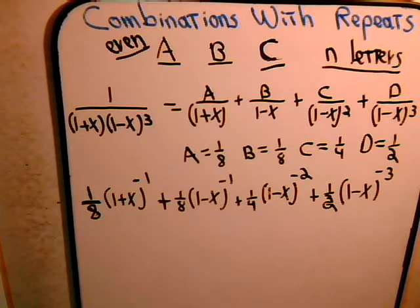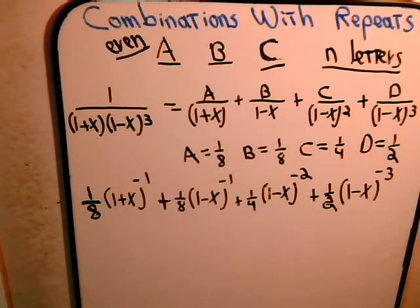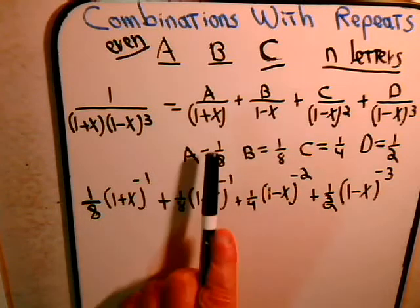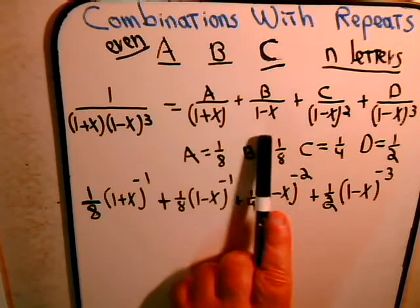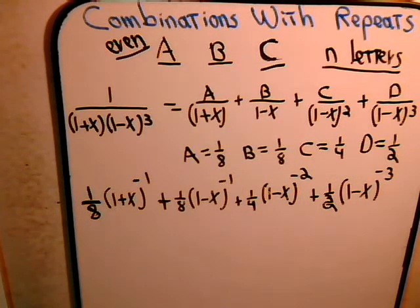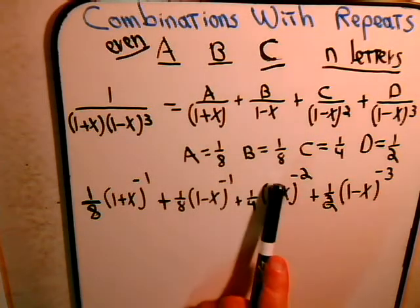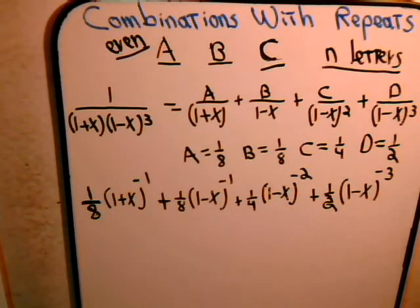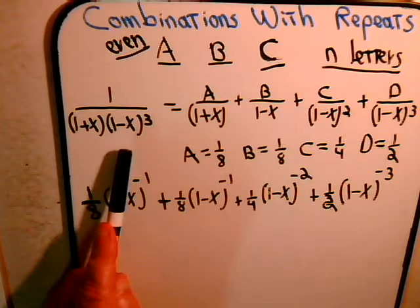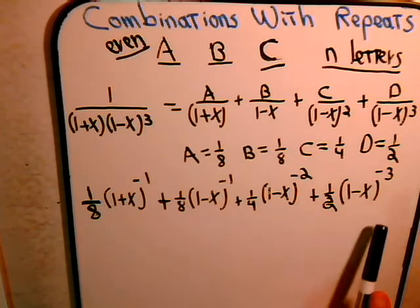In the first part of the video, we considered the generating function for each individual letter and then multiplied them together, giving us this expression. Using the method of partial fractions, we could write this as a sum of four simpler expressions. We determined that A equals one-eighth, B equals one-eighth, C equals one-fourth, and D equals one-half. So multiplying the generating functions gives us this expression, which we can express as the sum of these functions.